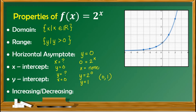Looking at the graph, it is true that the graph passes through (0, 1). As for increasing or decreasing, looking at the graph, as x increases, y increases. Therefore the function is increasing. Checking the function itself, the base is 2, which is greater than 1, confirming that the graph is increasing.